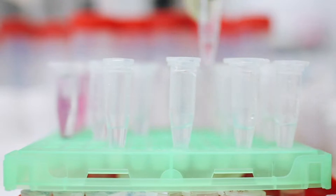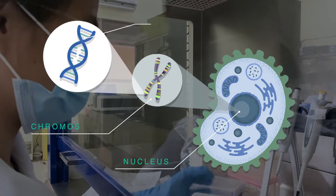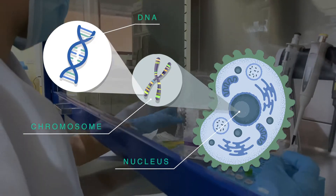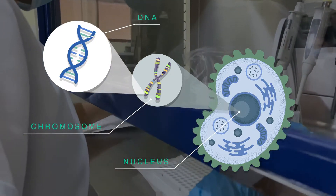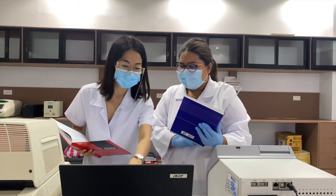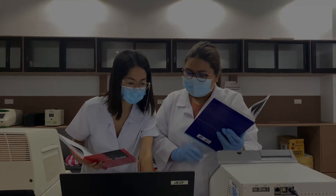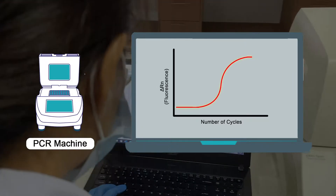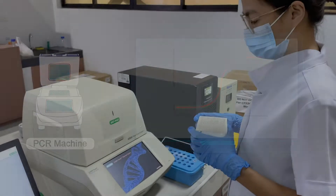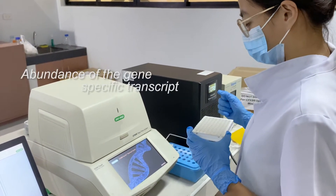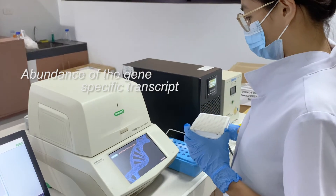Gene expression is the process by which the information stored in our DNA is used as instructions for the synthesis of proteins or other molecules. When studying gene expression with real-time PCR, changes in the expression of a particular gene or set of genes are measured through investigating the abundance of the gene-specific transcript.